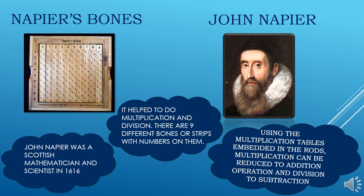Napier's Bones were invented by John Napier, a Scottish mathematician and scientist, in 1616. They helped to do multiplication and division. There are nine different bones or strips with numbers on them. Using the multiplication tables embedded in the rods, multiplication can be reduced to addition operations and division to subtraction.